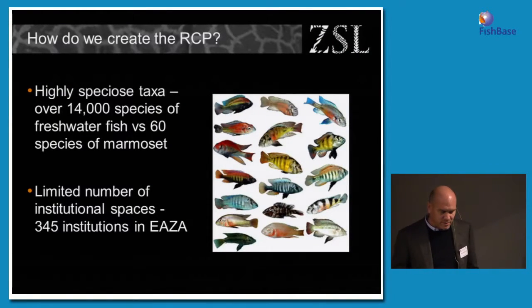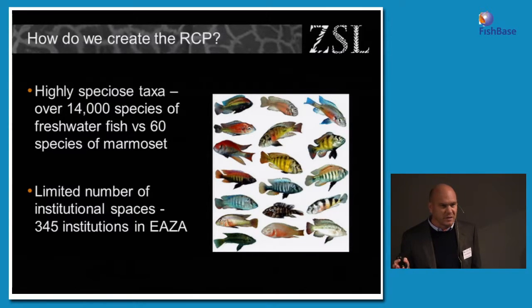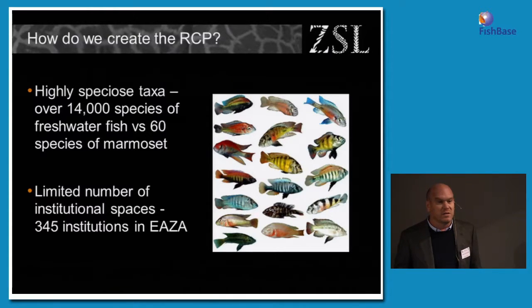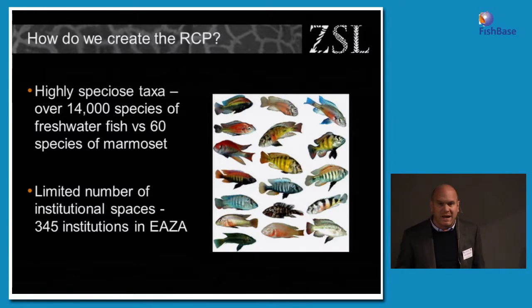So how do we create the RCP? For people like me that work with highly speciose taxa, it's no easy task. I mentioned the Callitrichidae — they had about 30 species to sort through. When we look at freshwater fishes, we're talking about over 14,000 species. Within the zoo and aquarium community, there's a limited number of people able to do the work. Within EAZA, the European Association of Zoos and Aquariums, we have about 345 institutions. Of course, not all of those have aquariums, and of those that have aquariums, not all of them work with freshwater fish. So it's a very small pool, which has meant we've had to go outside in some cases when developing our RCP.